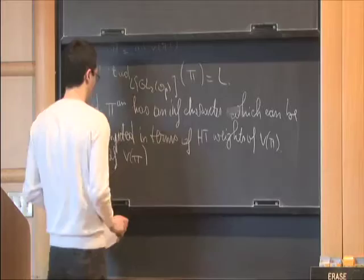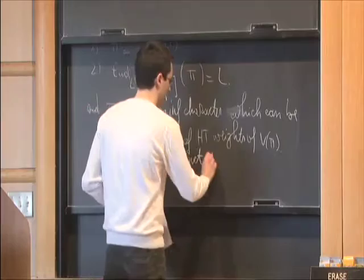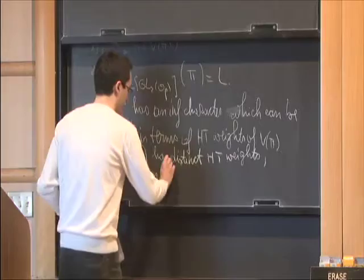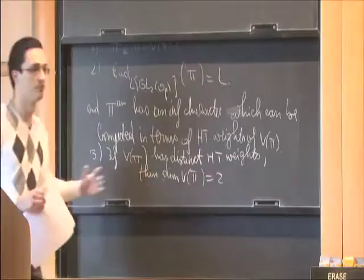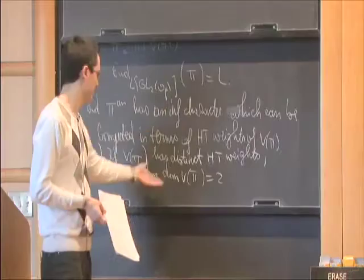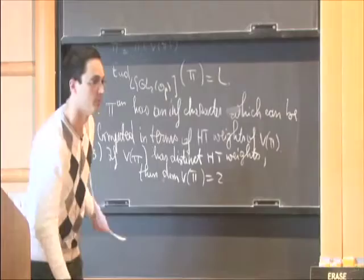If V(pi) has distinct Hodge-Tate weights, then the dimension of V(pi) equals 2. So you have basically an answer to Colmez's question, at least when V(pi) is regular. Unfortunately I have no way to check, given pi, how to verify if this condition is satisfied, so this is not a very satisfactory result. But the proof is so elementary that with a few more arguments there is perhaps a chance to prove it.